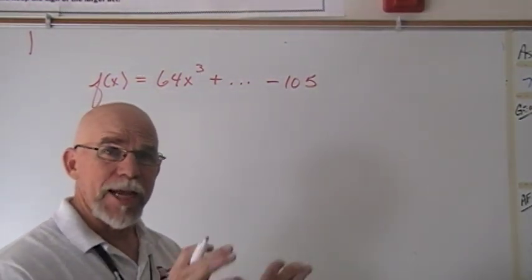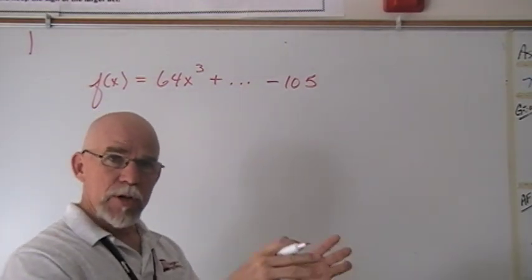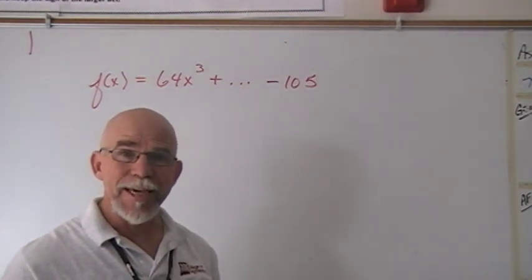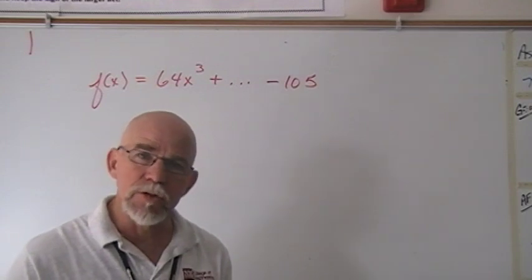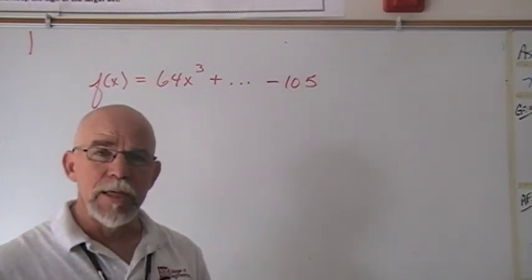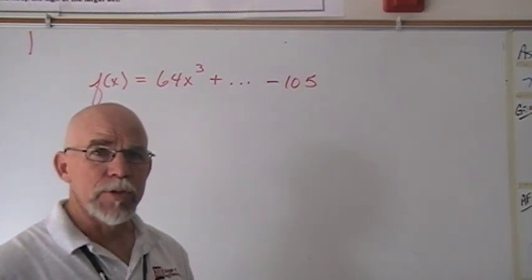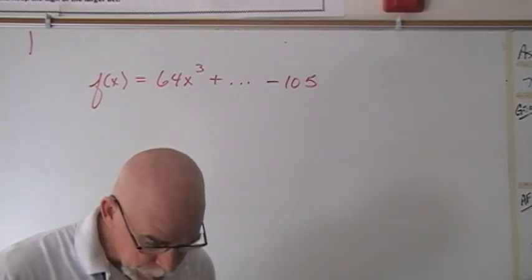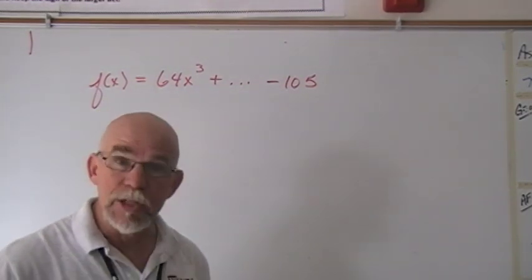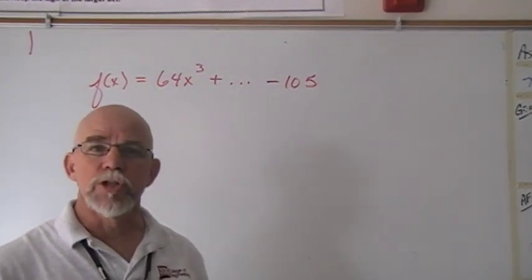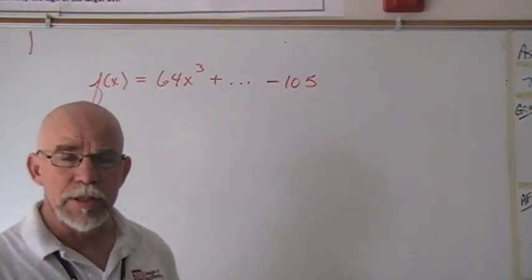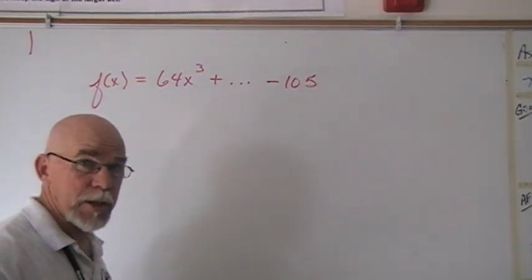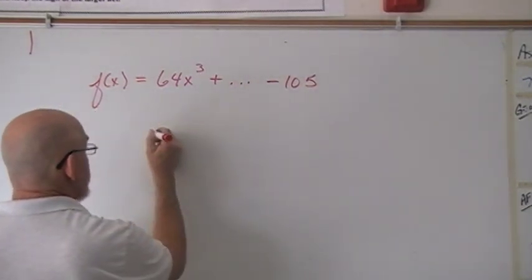Last week we were working on being given a zero and then using that to help us find others. Today we're not going to be given zeros. We're going to be given the polynomial and then be able to determine the possible zeros using the rational zero theorem.